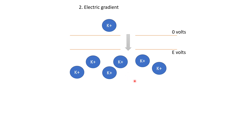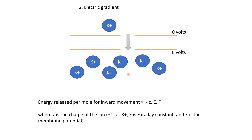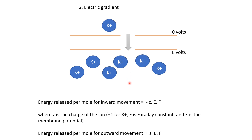We can quantify the energy released per mole of potassium ions if they move in due to the electrical gradient. This energy is given by minus zEF, where z is the charge on potassium ions (plus one), E is the membrane potential (minus 65 or minus 70 mV), and F is Faraday's constant. Because E is negative and there is a negative sign, this quantity becomes positive — energy is released when potassium ions move in. Conversely, the energy released per mole for outward movement is plus zEF.